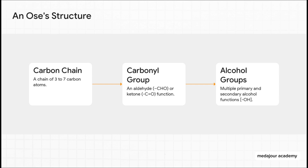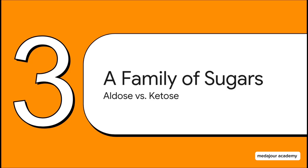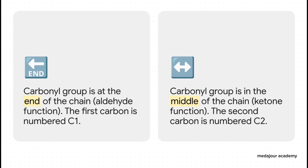Every single simple sugar is built from this plan. Biologists organize them using just two simple rules. The first rule is about location — specifically, where is that special carbonyl group? If it's sitting at the very end of the carbon chain, we call that sugar an aldose. But if it's tucked away somewhere in the middle of the chain, we call it a ketose. Just that one little difference gives you the two main branches of the entire sugar family.